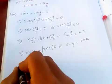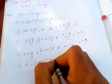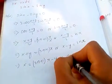Solving for x, we get x equals (2n+1)π minus y, or x equals 2nπ plus y.